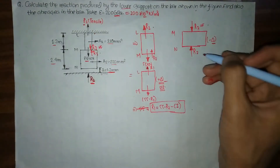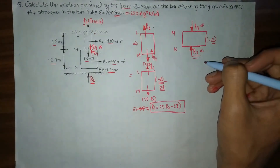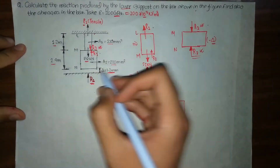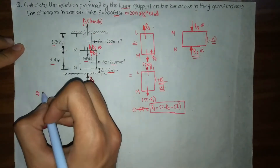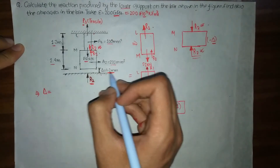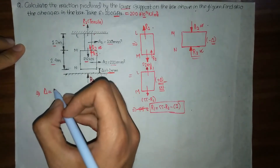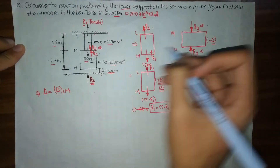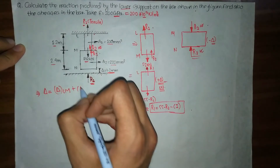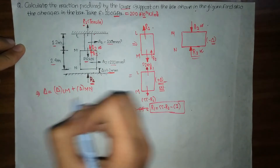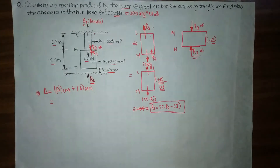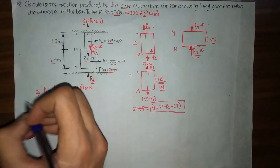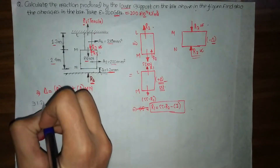We need to find the reaction produced by the lower support, which is R2. Our total deflection delta equals 1.2 mm, which is simply equal to the deflection of the LM portion plus the deflection of the MN portion.